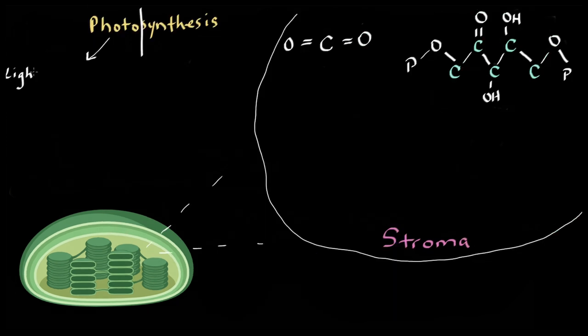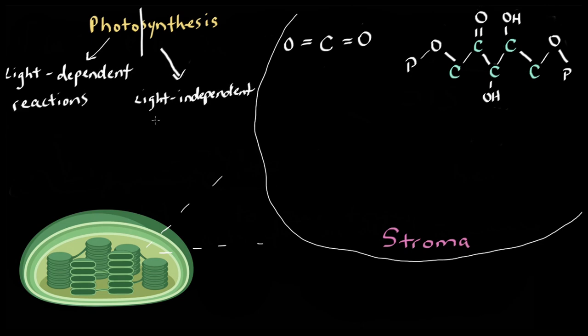So now that we've taken care of the section that's dependent on light, let's discuss the section that isn't. The light-independent reactions, or the Calvin cycle, occur in the stroma of the chloroplast. And this is where the earth-shattering chemical reaction occurs that allows for all life on this planet.